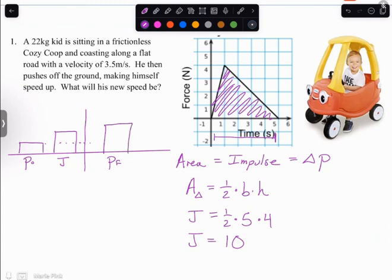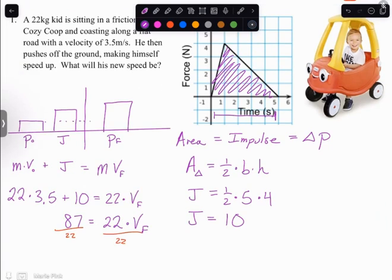So his momentum at the beginning is mass times velocity. The impulse we just figured out is 10. And then we have our mass times velocity of the kid at the end. I'm going to use v final. So mass of the kid was 22, starting velocity was 3.5, plus 10 because that was our impulse, is equal to 22 times the final velocity of the kid. So I get 87 is equal to 22 times my final velocity, and so that means my final velocity is 3.95.